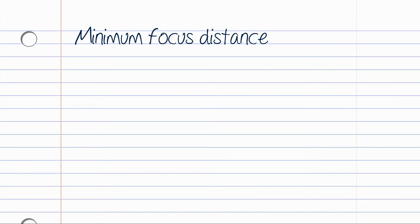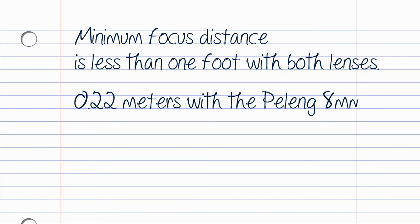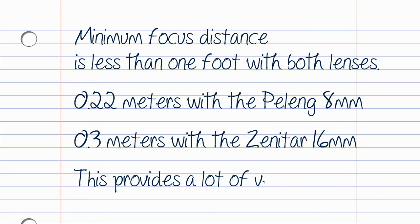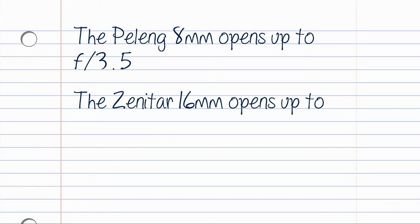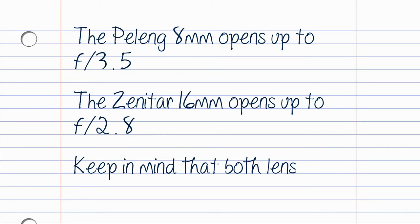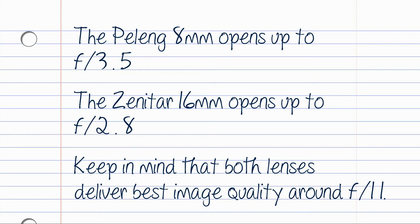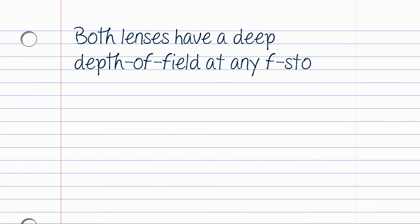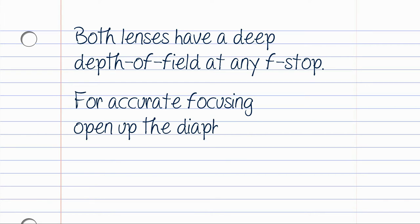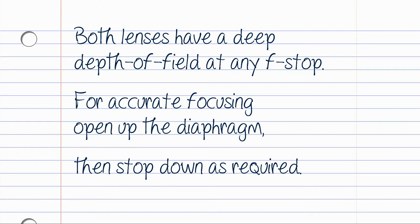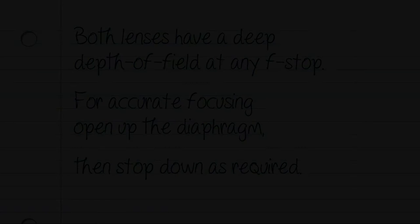The minimum focus distance is less than 1 foot with both lenses — 0.22m with the Peleng 8mm and 0.3m with the Zenitar 16mm — providing a lot of versatility. The Peleng 8 opens up to f3.5 and the Zenitar 16 up to f2.8. Keep in mind that both lenses deliver best image quality around f11, and both have a deep depth of field at any f-stop. For accurate focusing, open up the diaphragm then stop down as required.